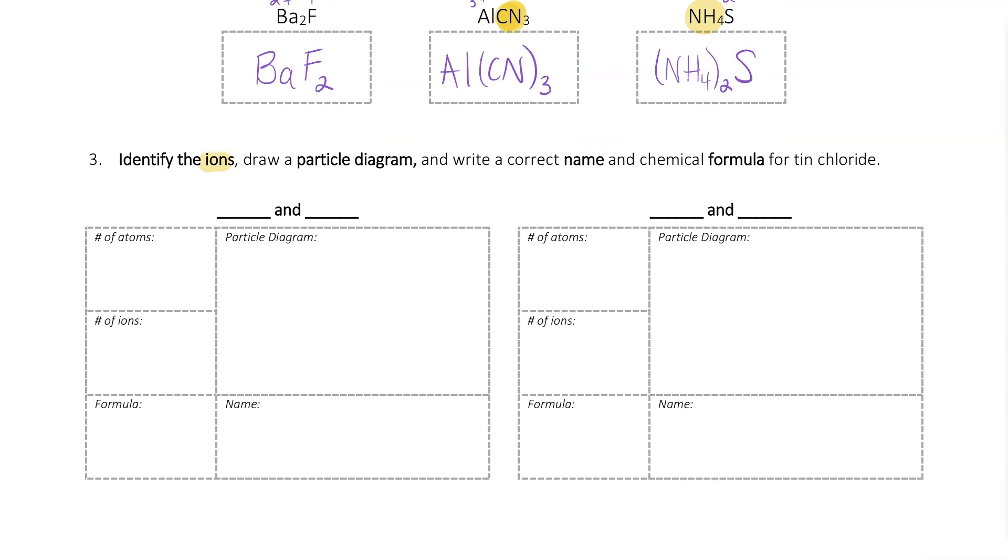Number 3 on this side. We're going to look at the ions, a particle diagram, name, and formula for tin chloride. Now, tin has two different forms. Tin can be tin plus 2 or tin plus 4.